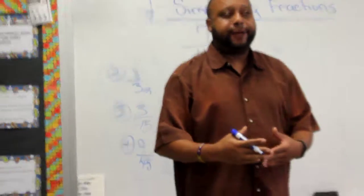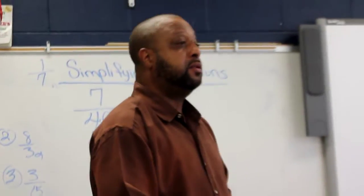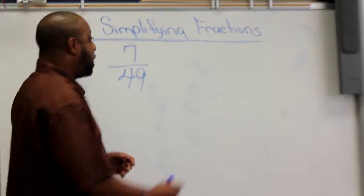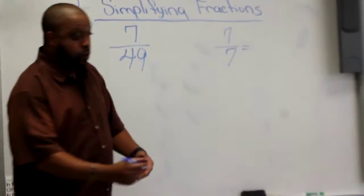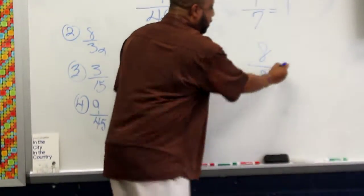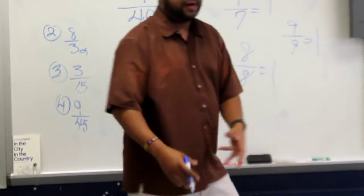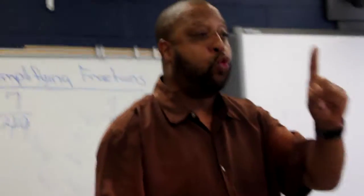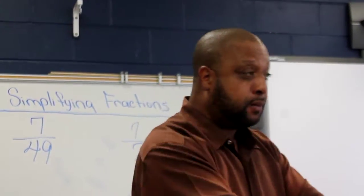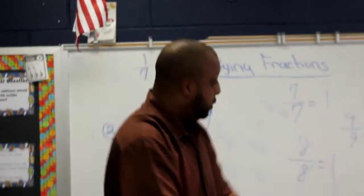I'm going to show you a way to simplify these fractions without using division. First of all, what is 7 over 7? And what does 7 over 7 mean? 1. And 8 over 8, what does that mean? 1. And 9 over 9, what does that mean? 1. The identity property of multiplication states that 1 times any number is that number. 1 times any number — that number.